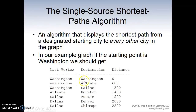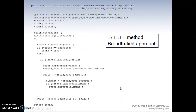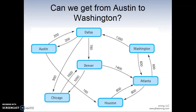For example, the last vertex to destination has a weight — this is the distance. Washington to Atlanta: this weight is 600. Washington to Dallas: this weight is 1300.